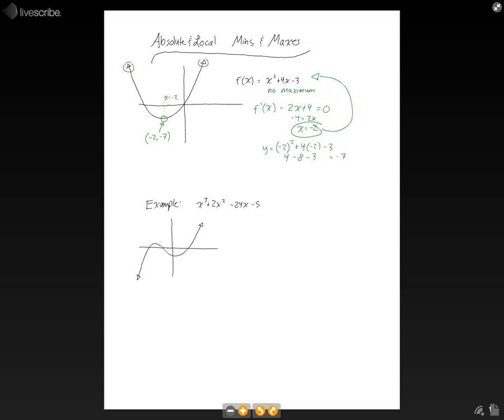Since this is a cubic function, we know that it's going to have a local minimum and a local maximum. Here's the maximum, here's the minimum. However, it will not have an absolute max or an absolute min, because this end goes on up to positive infinity, and this end goes all the way down to negative infinity. It will only have local maxes and mins.